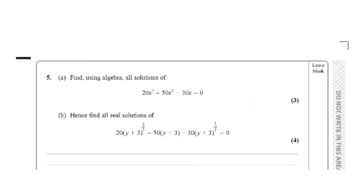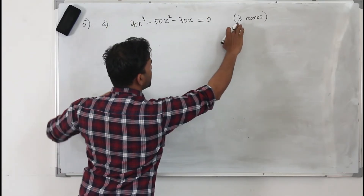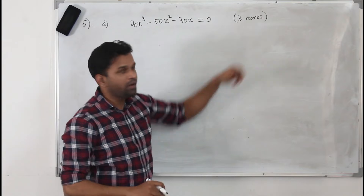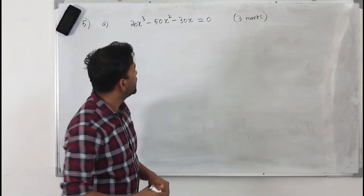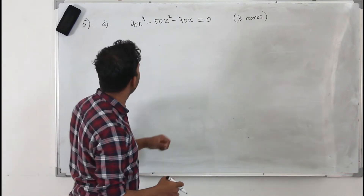Question number 5, part A says: find using algebra all the solutions of 20x cubed minus 50x squared minus 30x equals 0. On this part A, you are given this equation, and you have three marks for solving it.